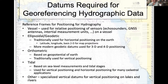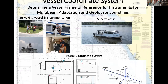There are orthometric datums based on the geopotential of the earth, traditionally used for vertical positioning. There are also tidal datums based on sea level measurements and tidal stages, used for both vertical and horizontal positioning for many boundaries, as well as specialized vertical datums for lakes and rivers. A vessel reference frame is established by surveying the locations of GNSS antennas, multi-beam systems, and inertial measurement units on a survey vessel to give the relative locations of all sensors.